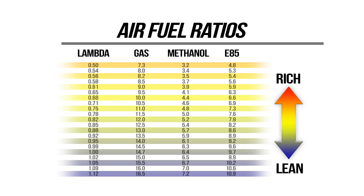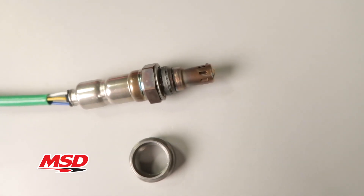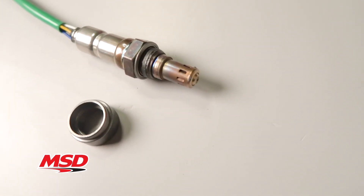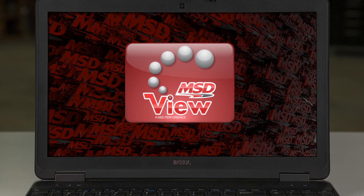Capable of measuring lambda down to 0.5, which is the gasoline equivalent of an extremely rich 7.35 to 1 air fuel ratio, the NTK sensor accurately measures rich AFRs, even on methanol powered cars.